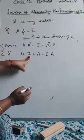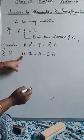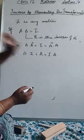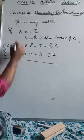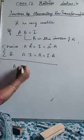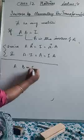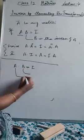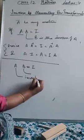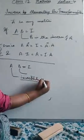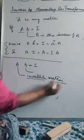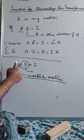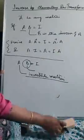In the same manner, the identity element when operated to any other number gives back the same number. If A times B equals I, it means B is the inverse of A and A is said to be an invertible matrix. If the inverse exists for any matrix, then it is a unique one.